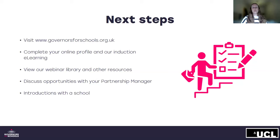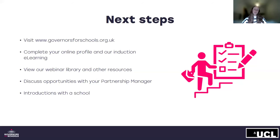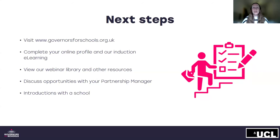Moving on to next steps. I would really encourage you to visit our website to complete your online profile, which we share with schools during the process of finding you a suitable governor role. Once you have submitted your application, you will be given a key contact within the partnerships team, who will be your first point of contact and will begin looking for opportunities for you. As opportunities arise, they will share these with you to discuss suitability. The way that Governors for Schools works — we don't publicly advertise the vacancies; we go through a personalised matching process. Your dedicated team member takes the time to look at your application and goes through that personalised matching process to find you the best opportunity within your local community.